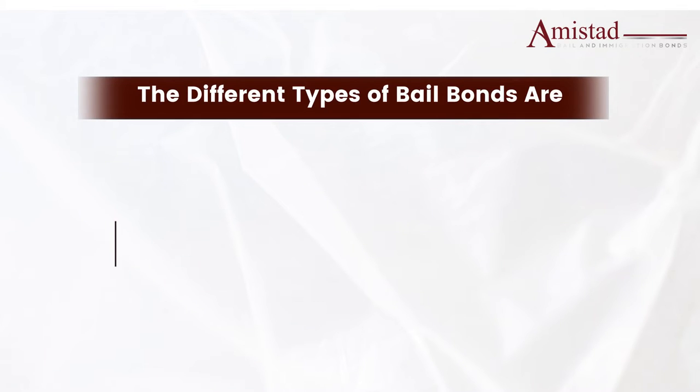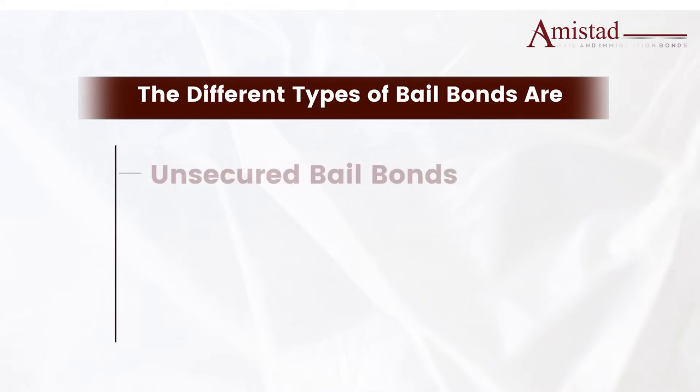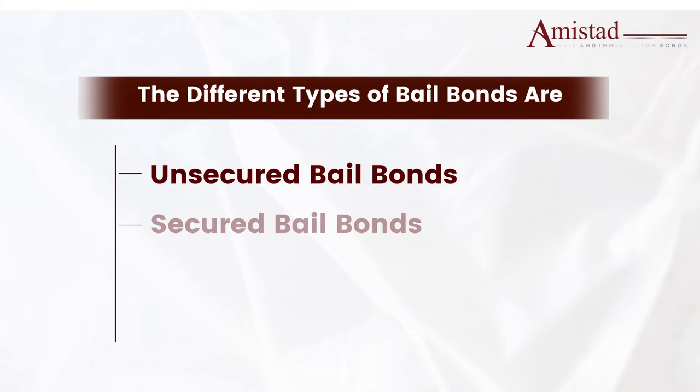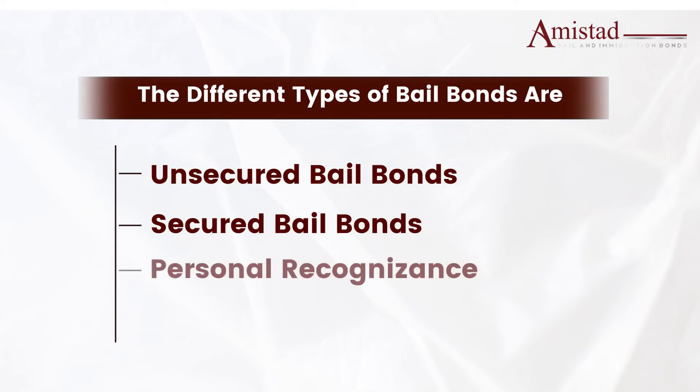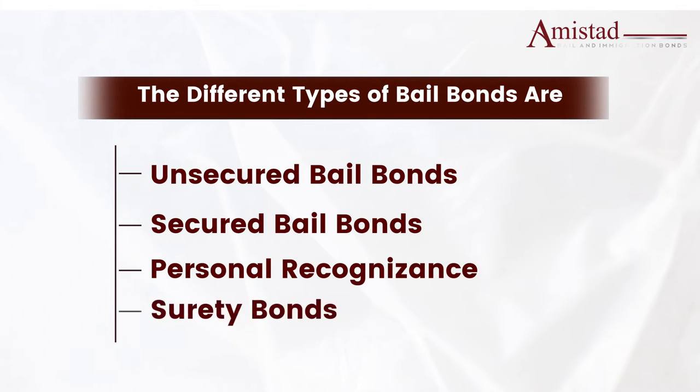The different types of bail bonds are: unsecured bail bonds, secured bail bonds, personal recognizance, and surety bonds.